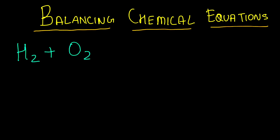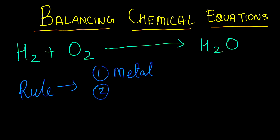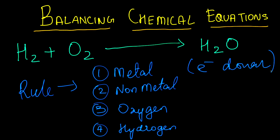Let's consider our previous example: H₂O₂ plus O₂ gives rise to H₂O. Now we need to balance this. First, we balance metals. Then, non-metals. Third, we balance oxygen atoms. Fourth, we balance hydrogen atoms. A metal is an atom that donates an electron, and a non-metal accepts an electron.